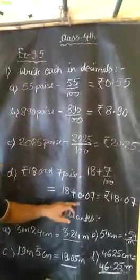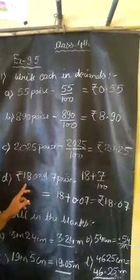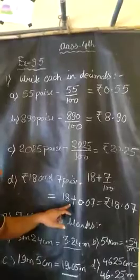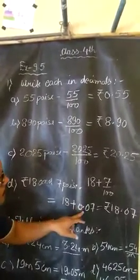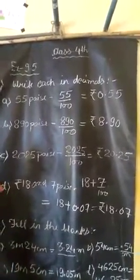Here already 18 rupees. We add 18 rupees and 0.07 rupees, it will be ₹18.07.